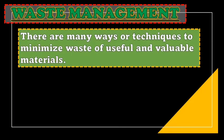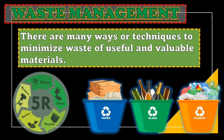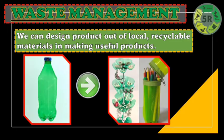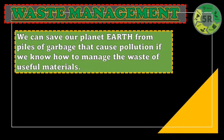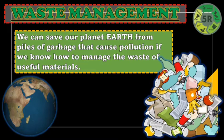There are many ways or techniques to minimize waste of useful and valuable products. It can be done through sorting waste materials and applying the 5Rs techniques. We can design products out of local recyclable materials to make useful products. For example, plastics can be turned into decorations, accessories holders, or pencil cases. We can also save our planet Earth from piles of garbage that can cause pollution if we know how to manage waste materials.